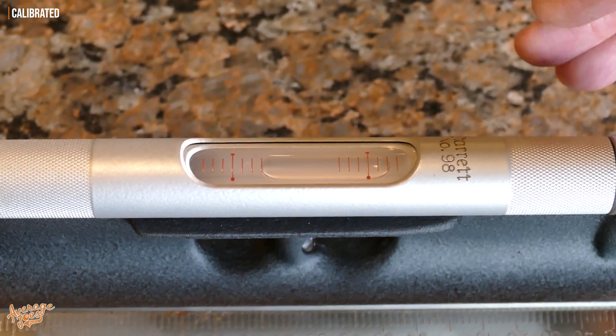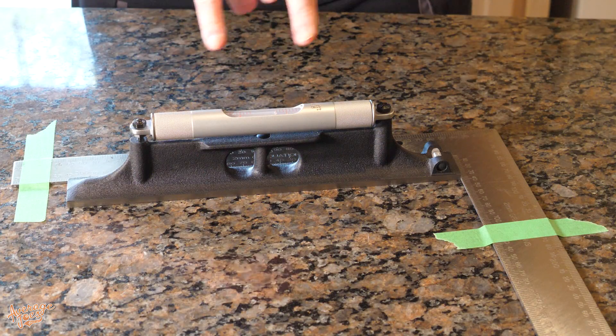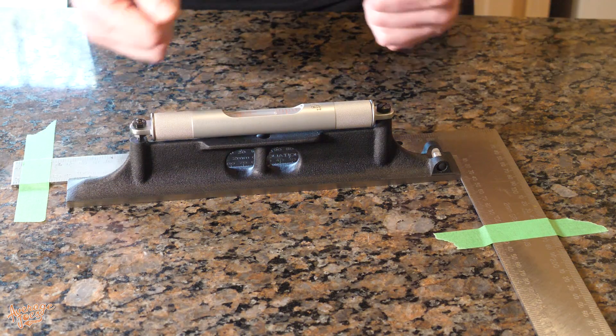So we now know that the machinist level is correctly calibrated, but always make sure you double check it after tightening up the locking nut. And so that's how to calibrate a machinist level.